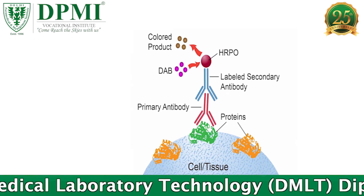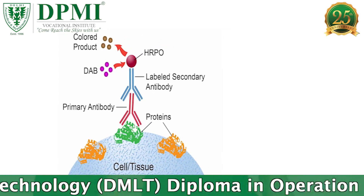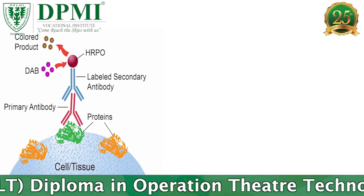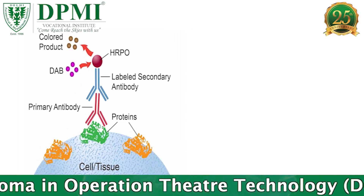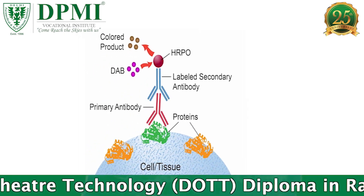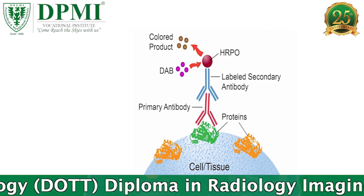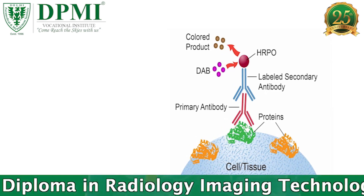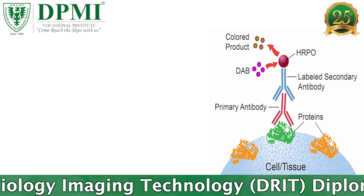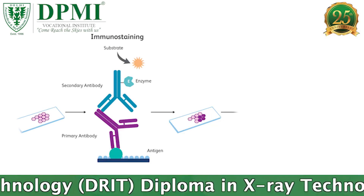This allows antibodies to enter the tissue and bind to epitopes within the cell. Primary antibodies against a protein of interest are added. Secondary antibodies with enzymes like horseradish peroxidase (HRP) conjugated to their Fc domain are then added to target the primary antibody.